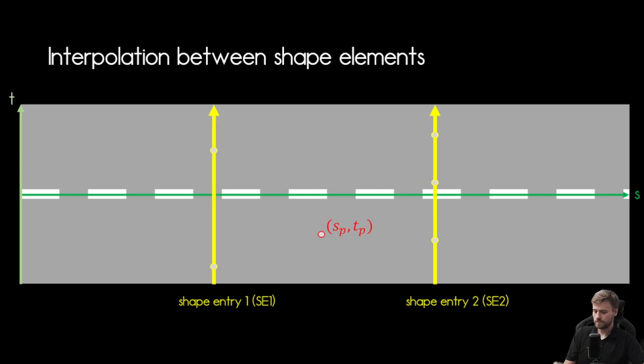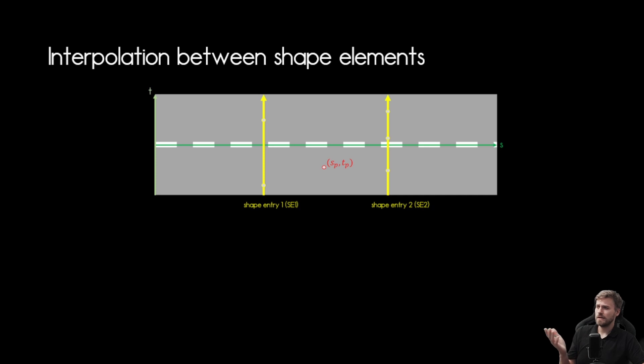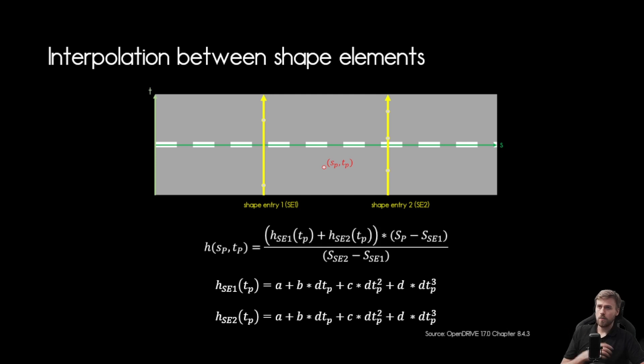So the equations that we need now are provided by the standard itself and we can see that we get the equations of each of those shape entries here. Obviously depending on how many shape elements you find for that shape entry you need to adapt that a bit but it will look like this. And if you combine that to calculate the height of that selected point this is going to be the equation and you can find that in the OpenDrive standard itself in chapter 8.4.3 in version 1.7.0.